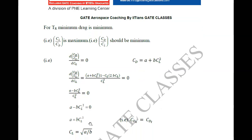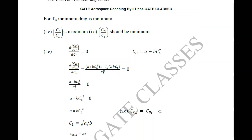The equation simplifies to a = b·C_L². Here a is nothing but your C_D0 and b·C_L² is nothing but your C_Di. So for drag to be minimum, your parasite drag coefficient should be equal to your induced drag coefficient.